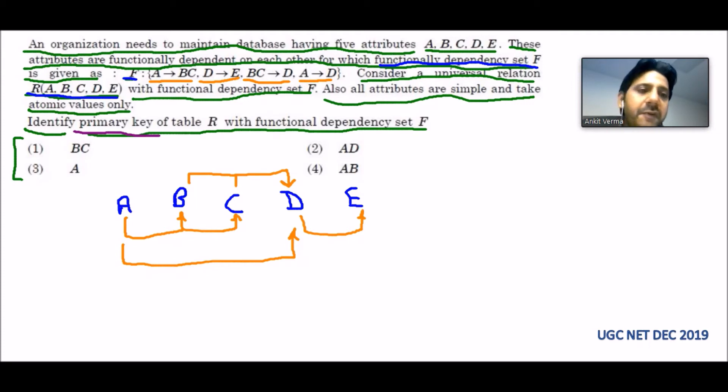To find the primary key, we have to first see this diagram and find out where incoming edge is not present. On E incoming edge is there, on D there are two incoming edges, on C incoming edge is there, on B incoming edge is there, but on A incoming edge is not there.